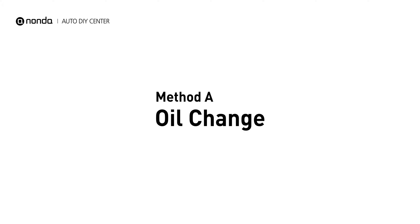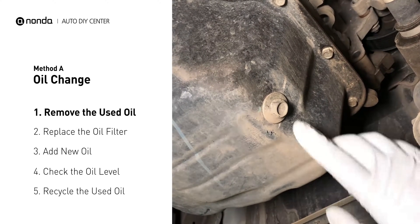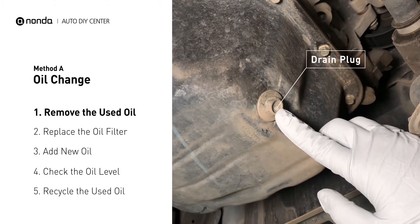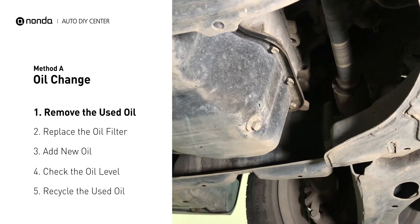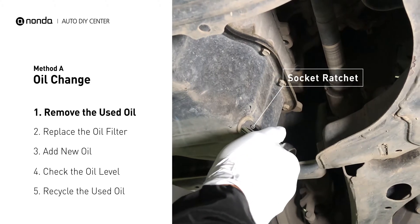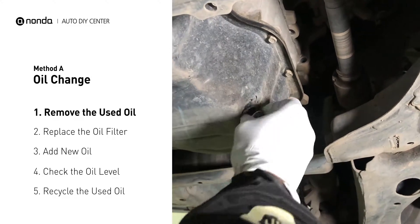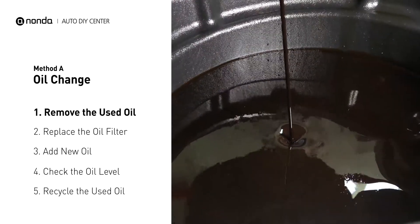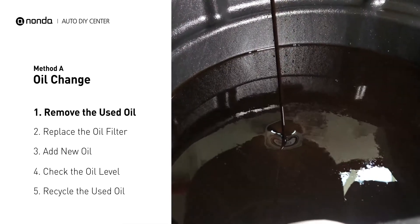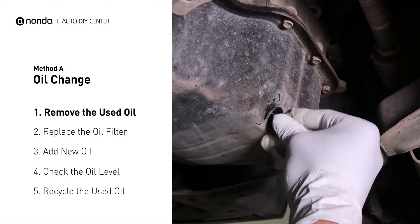Method A: Oil Change. Locate the oil drain plug on your vehicle and place an oil collection pan underneath it. Use the socket ratchet to remove the plug from the oil pan on your vehicle. Once the plug is removed, the oil should start flowing out into your collection pan. Once all the oil is drained, replace the drain plug and tighten it back on.